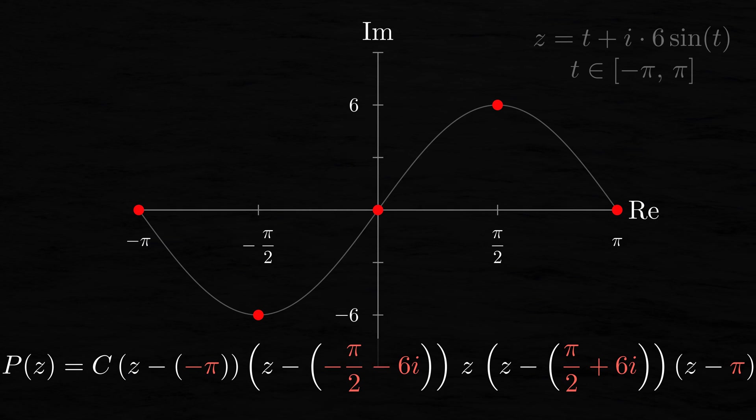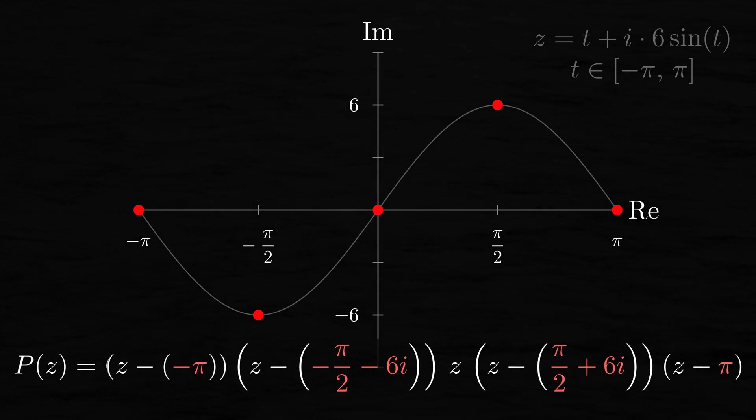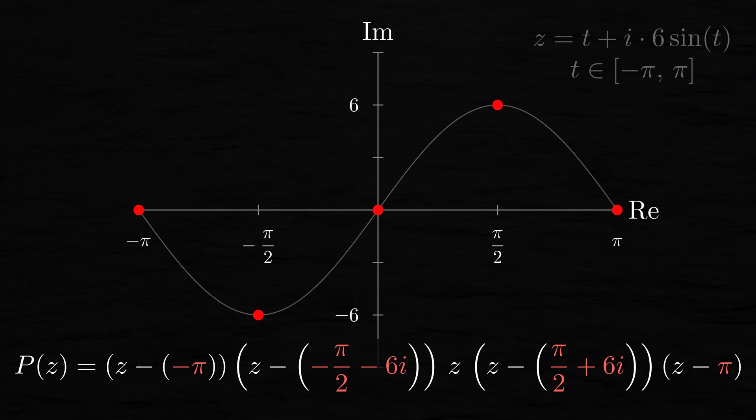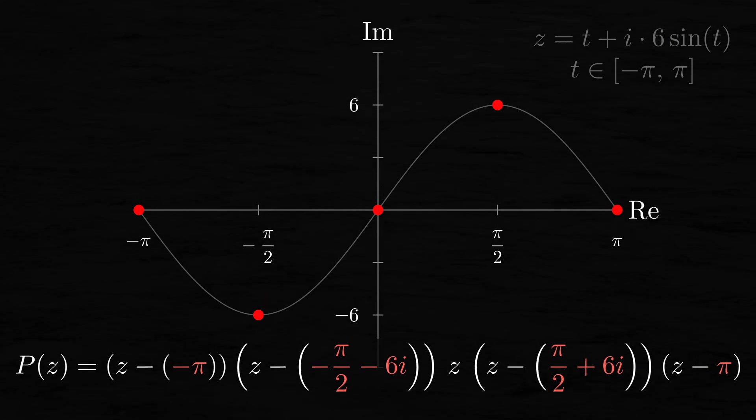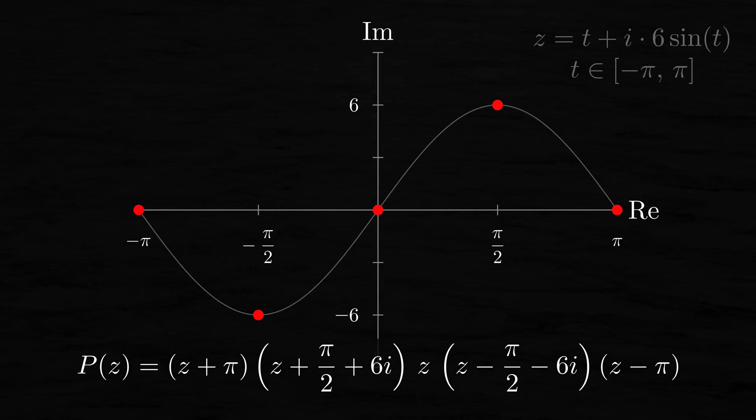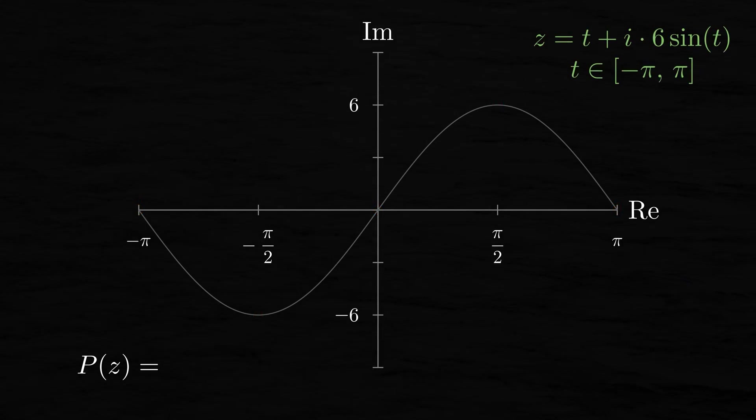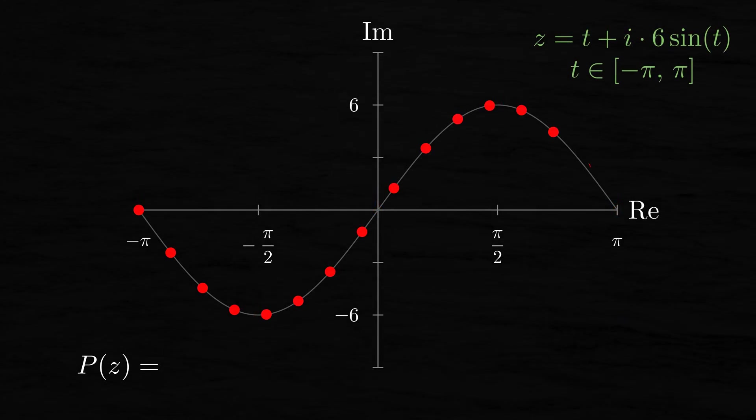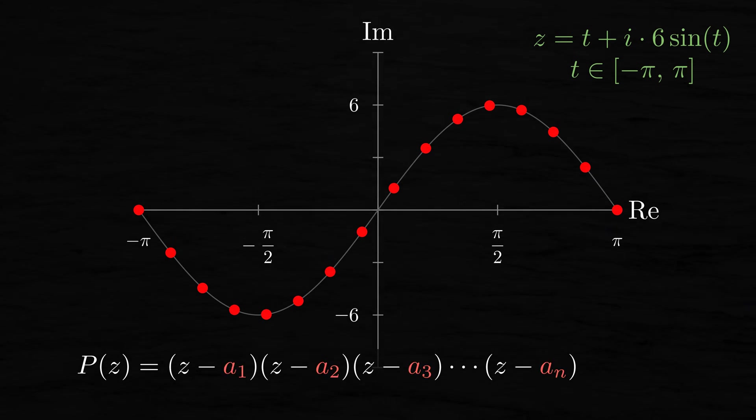Since we're only going to be interested in the zeros of these polynomials and in the zeros of their derivatives, we can set the constant c to 1, since this won't affect the zeros. Of course, if we want to, we can get rid of some parentheses and simplify this to this expression here. Okay, if instead of five zeros, we want a polynomial with n zeros on this sine curve, the expression gets a little bit more complicated, but it's not too bad.